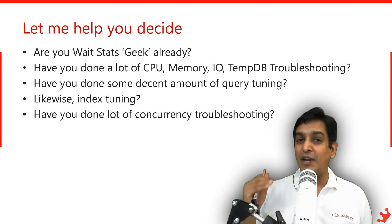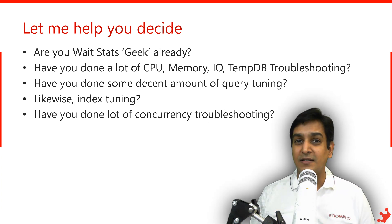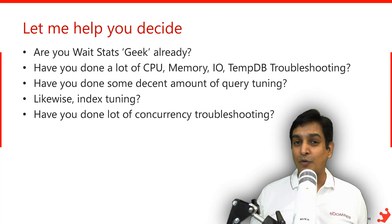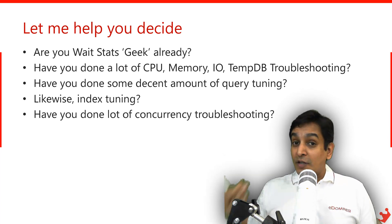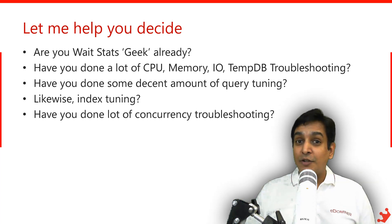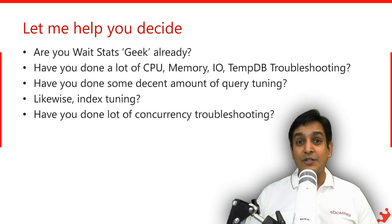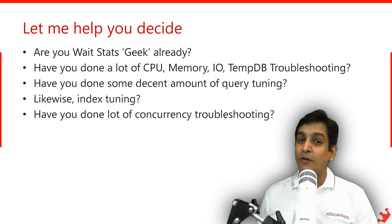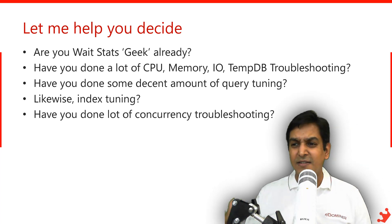Have you been troubleshooting CPU, memory, IO, and TempDB for some time? Do you know the bad queries causing excess CPU cycles, consuming IO, how to track buffer pool memory consumption, or how to track memory clerks when you get OOM errors? Have you done a decent amount of query tuning — do you know how to read an execution plan, find performance issues in it, and fix them? Likewise, do you know index internals, multicolumn ordering problems, how to find unused indexes, and how to find missing indexes?